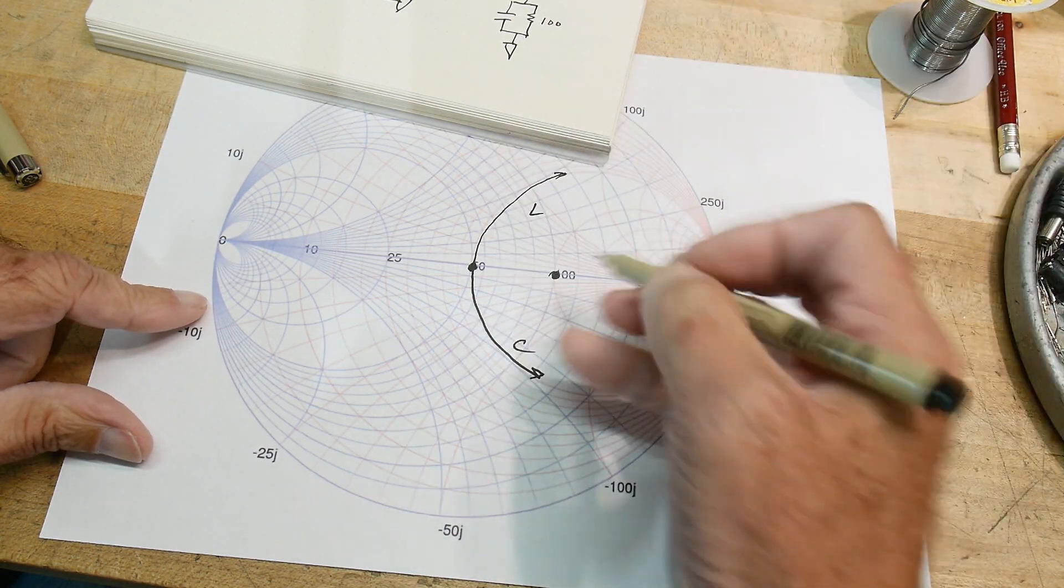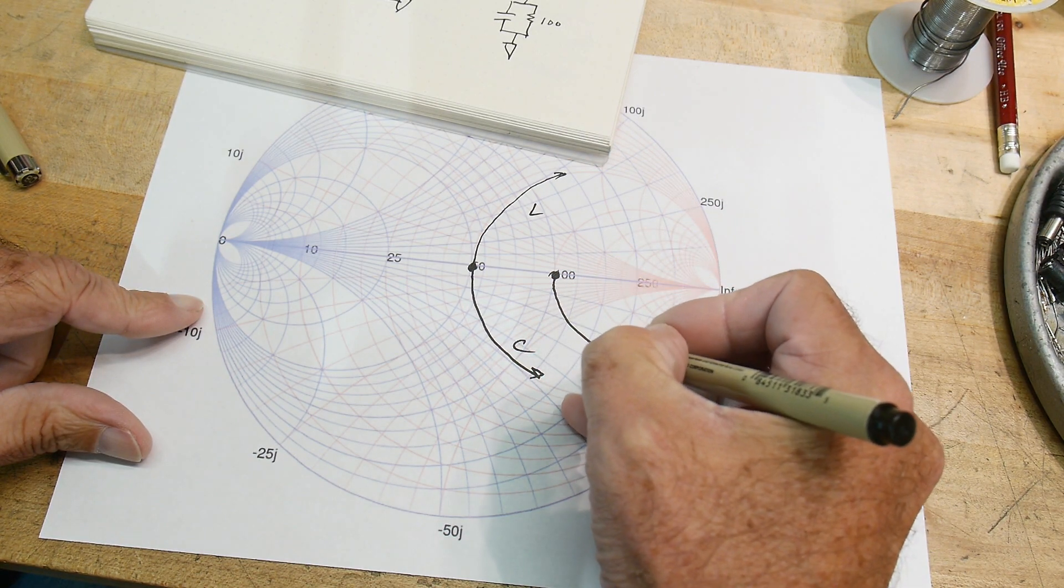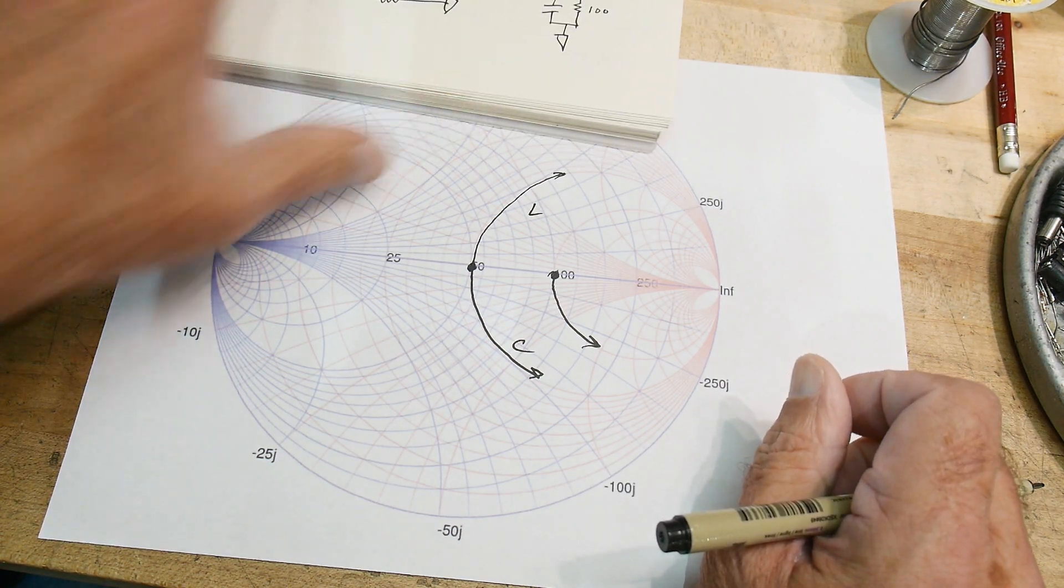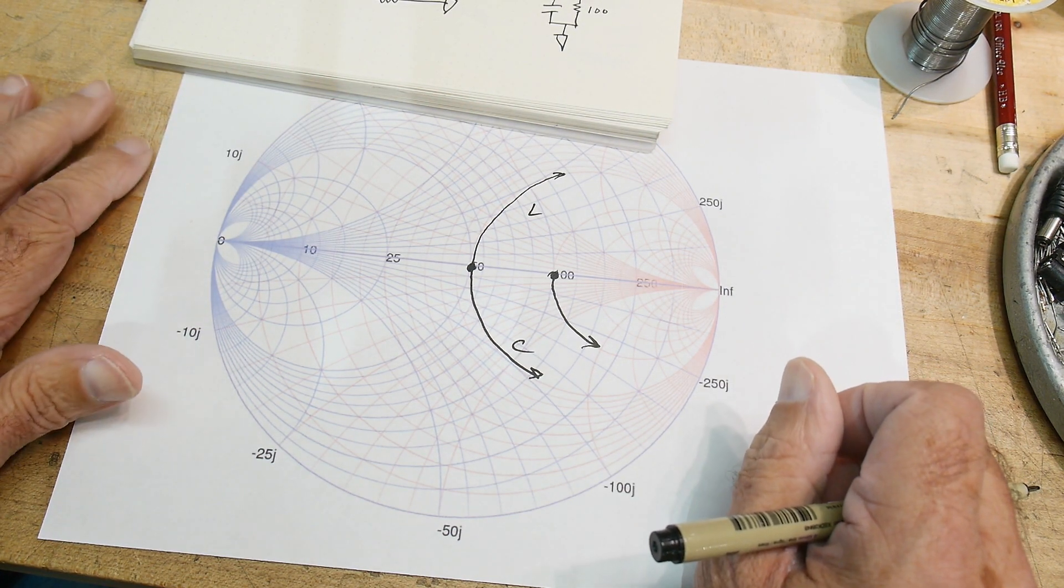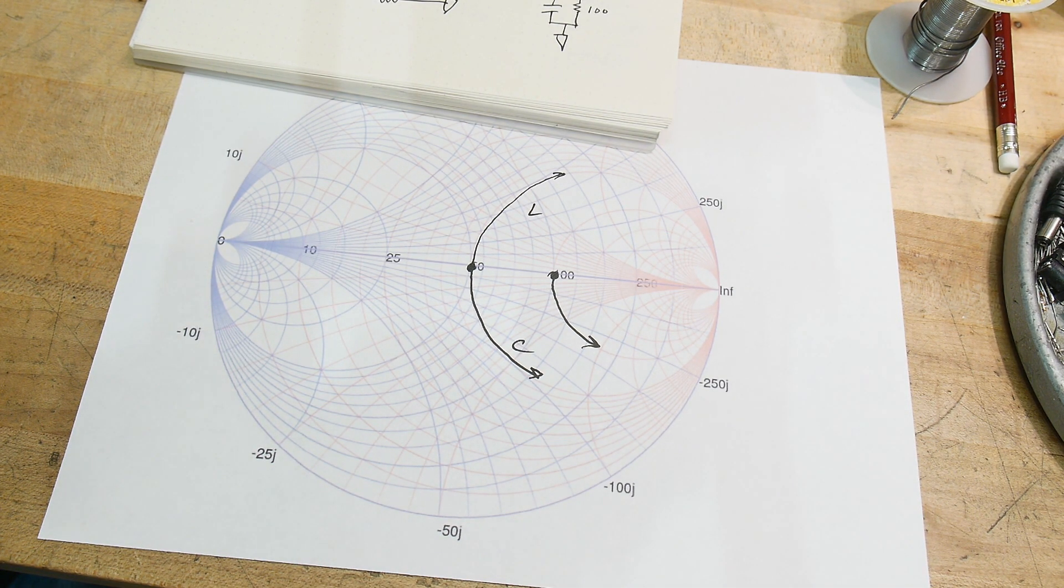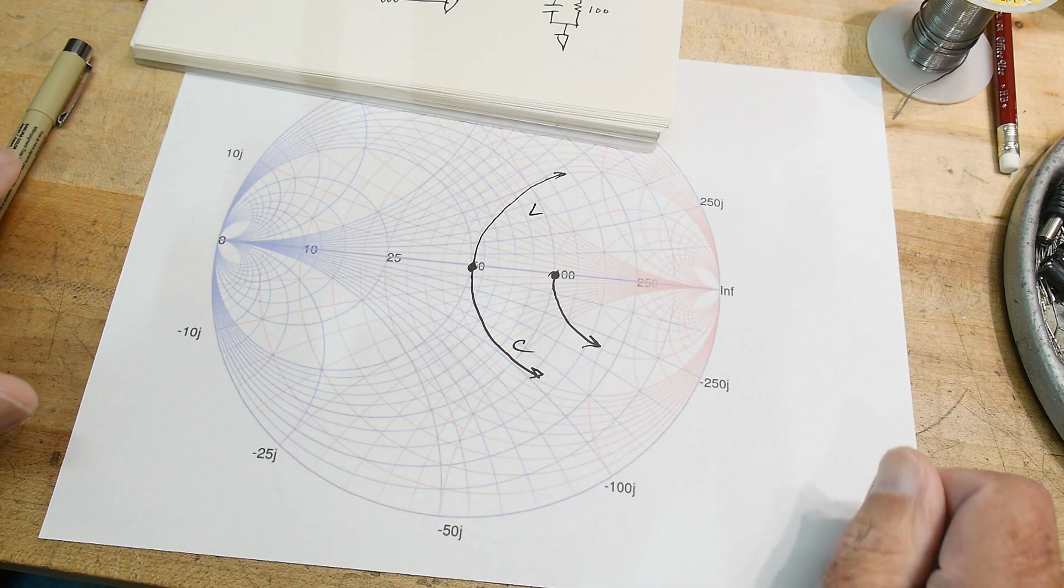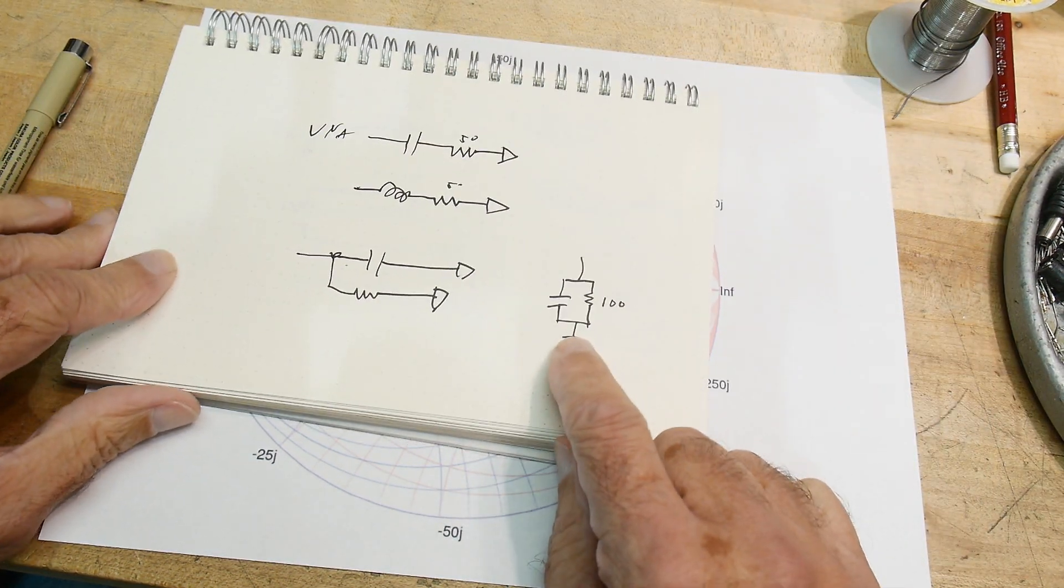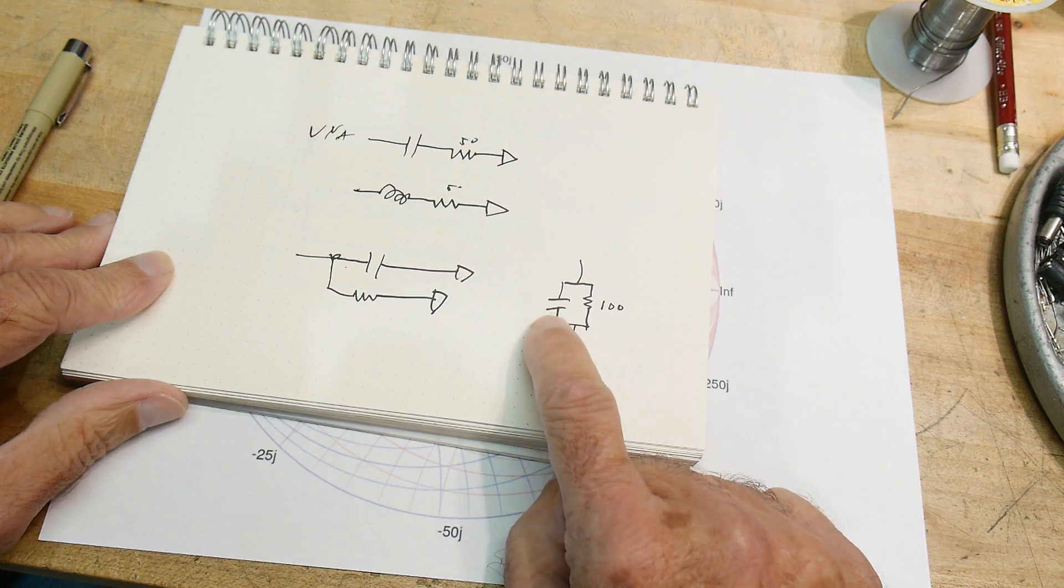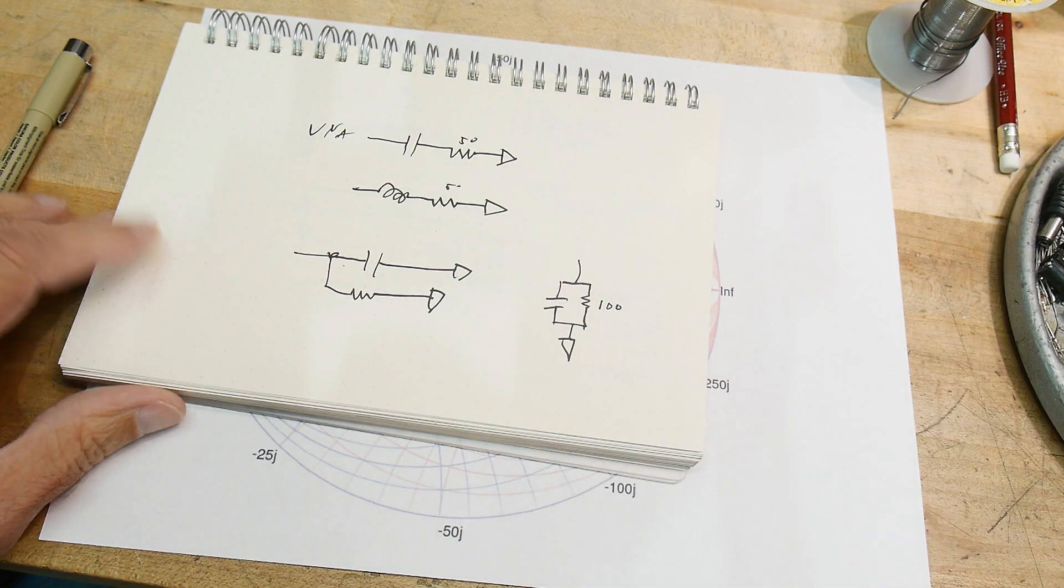We know we're going to start here at a hundred ohms this time and we have a capacitor. If it were in series it would travel along this line, but it's in parallel. So what happens when it's in parallel? Let's go over to the vector network analyzer and we'll hook it up and see what this does.